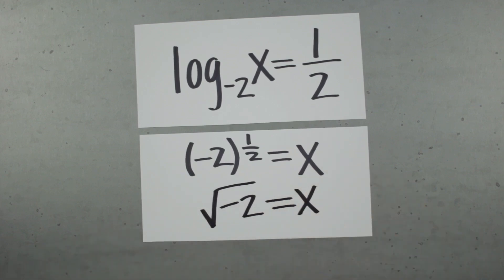As you know, we can't take the square root of a negative number, so this equation breaks down. That's why we don't allow negative numbers in the base of the logarithm.